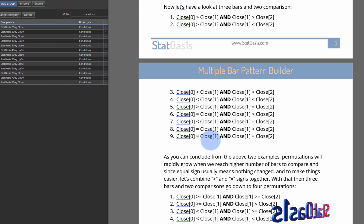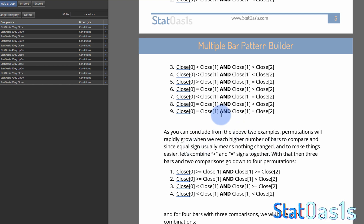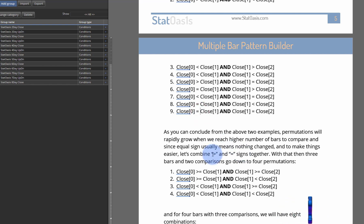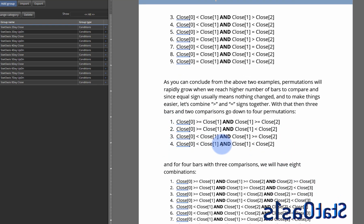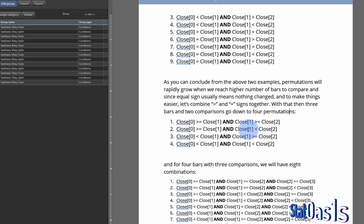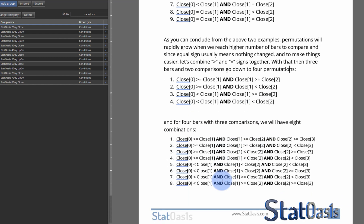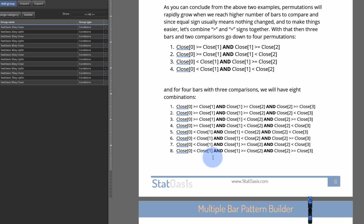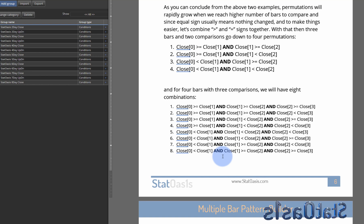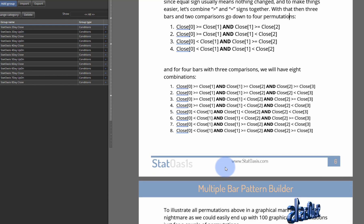Although it's automated, checking too many combinations doesn't make sense. We can easily combine the equal sign with one of the up or down directions. So if we combine greater-than and equal, then with three bars we go down to four combinations: greater/greater, greater/lower, lower/greater, lower/lower. With four bars we grow to eight combinations. This tool goes up to eight bars.